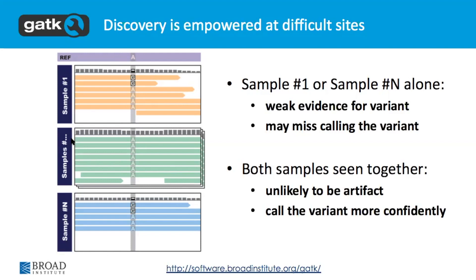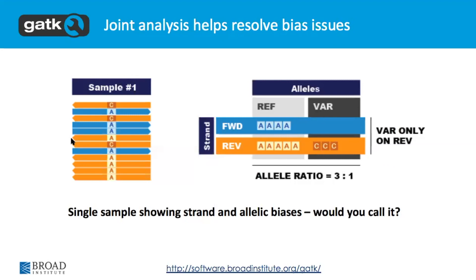Having more samples gives you more power, more information about a particular site, and allows you to update your likelihood accordingly. You can look at any particular site across all samples and see if there is any evidence of strand bias or allele bias. Instead of having just one sample to go on, you have 50,000 samples, and then you can be very sure that something is happening.